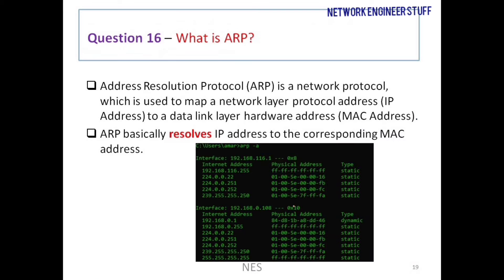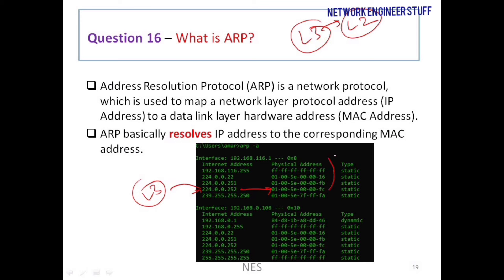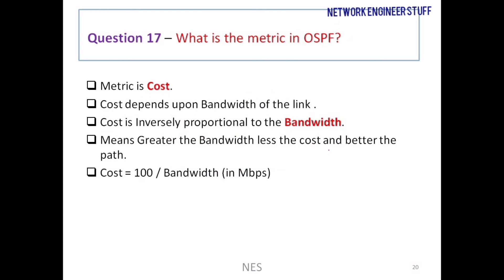Question number 16: what is ARP — Address Resolution Protocol? ARP is a network protocol used to map a network layer address (IP address, layer 3) to a data link layer address (MAC address, layer 2). As shown in the diagram, an IP address such as 224.0.0.252 is resolved to a MAC address. This mapping from IP address to MAC address is done by ARP.